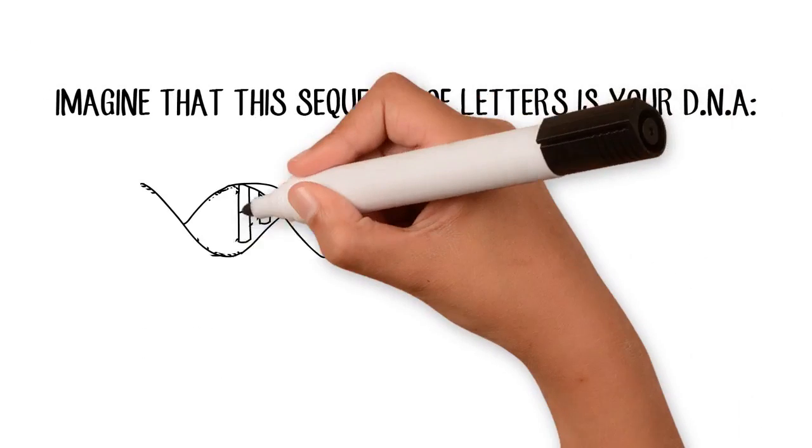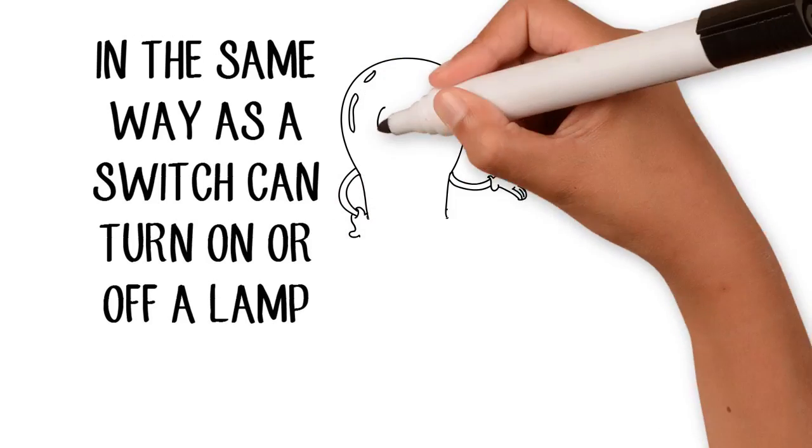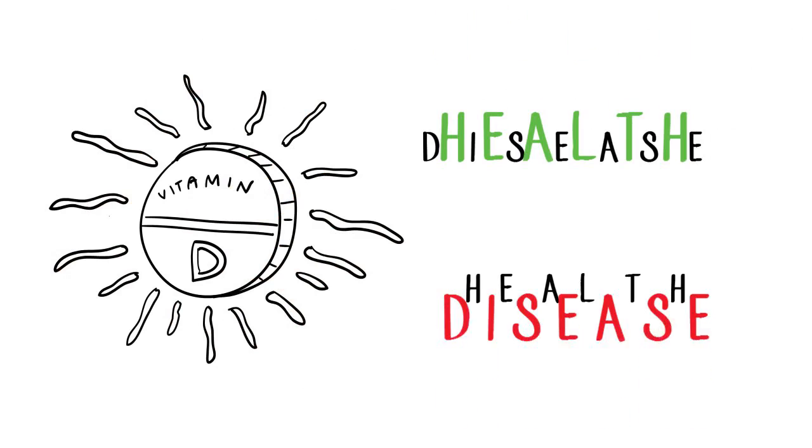Imagine that this sequence of letters is your DNA. In the same way as a switch can turn on or off a lamp, D-vitamin can turn on the genes of health and turn off the genes of disease.